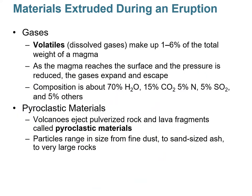Other materials extruded from eruptions include gases, which we call volatiles. These dissolved gases make up anywhere between one and six percent of the total weight of the magma. As magma reaches the surface, pressure is reduced and the gases expand and escape — like popping a champagne cork, where the pressure equalizes and carbonation escapes once you depressurize the bottle.